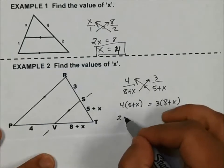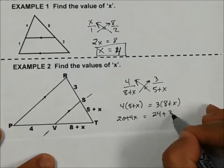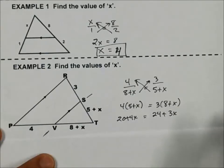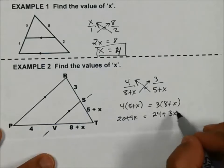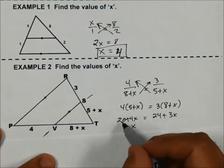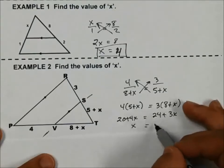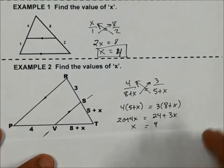If I move things over, I'm going to subtract the 3X, so it gives me X on the left. Then I want to subtract 20. 24 minus 20 is going to give me 4. So I know X is 4.